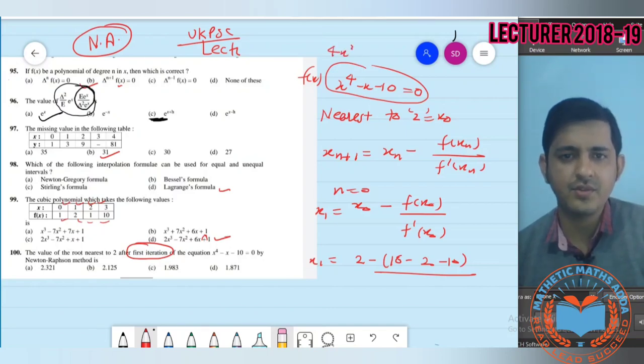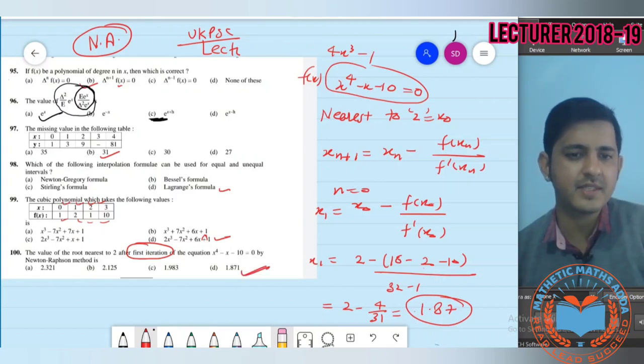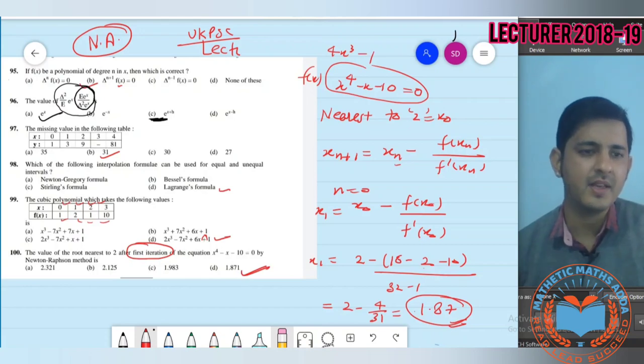f(x₀) is 16 minus 2 minus 10, f'(x) is 4x cube minus 1. At x equals 2, f'(x) is 32 minus 1 equals 31. So x₁ equals 2 minus 4/31. After calculation this gives 1.87. The last option is the answer. If second approximation was asked, we would take one more step where n equals 1.